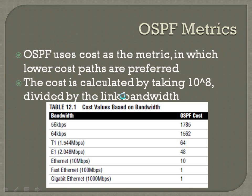OSPF uses cost as the metric, in which lower cost paths are preferred. Lower numbers are better for determining the best route.